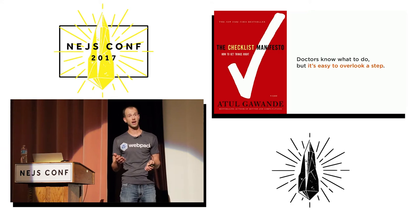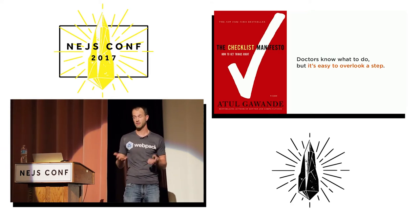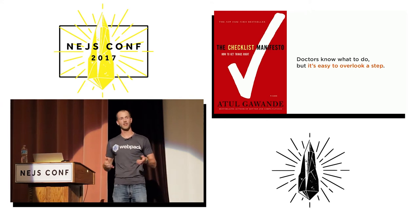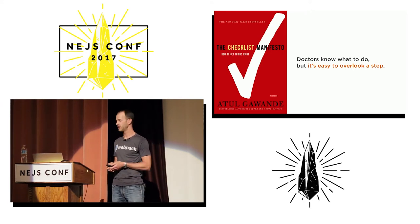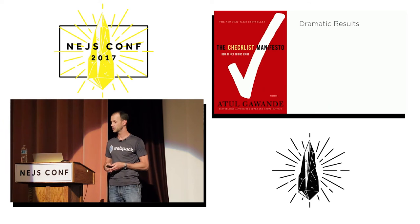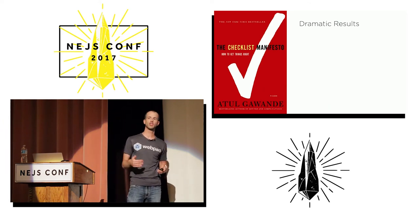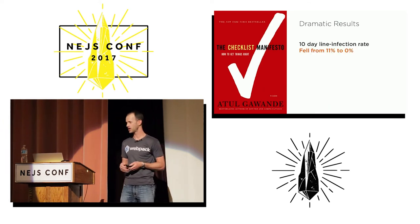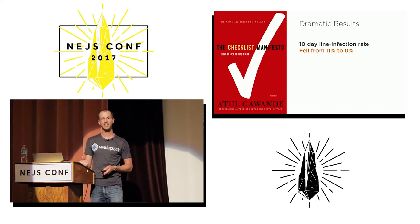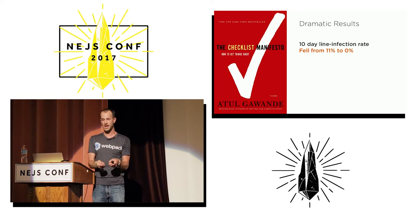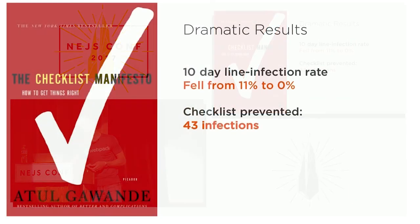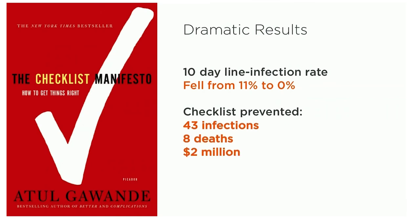What they found was a percentage of the time a step would be missed, and people die when that happens. By creating checklists, they saw dramatic results. The 10-day line infection rate fell from 11% to zero. The checklist prevented 43 infections, 8 deaths, and $2 million in costs.